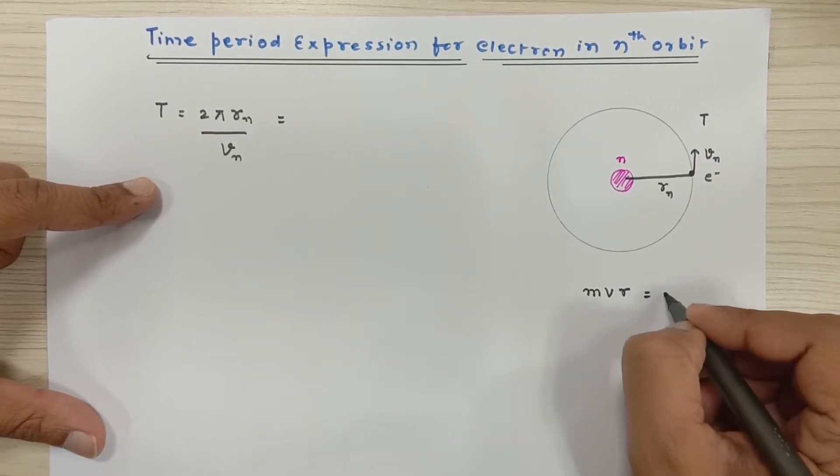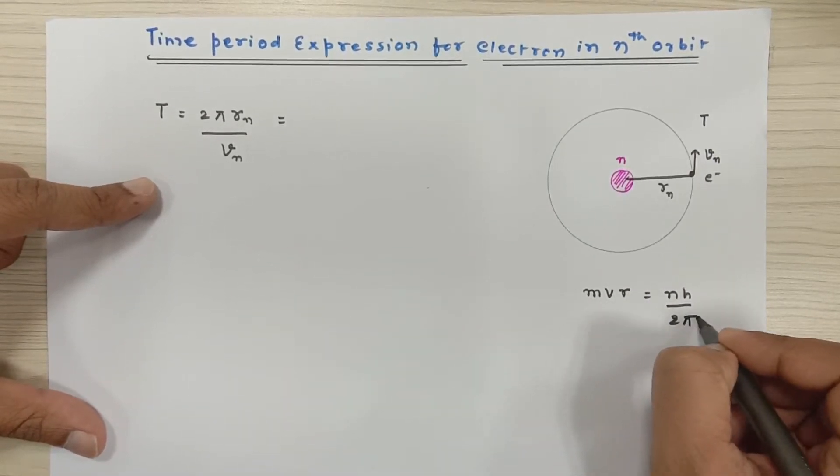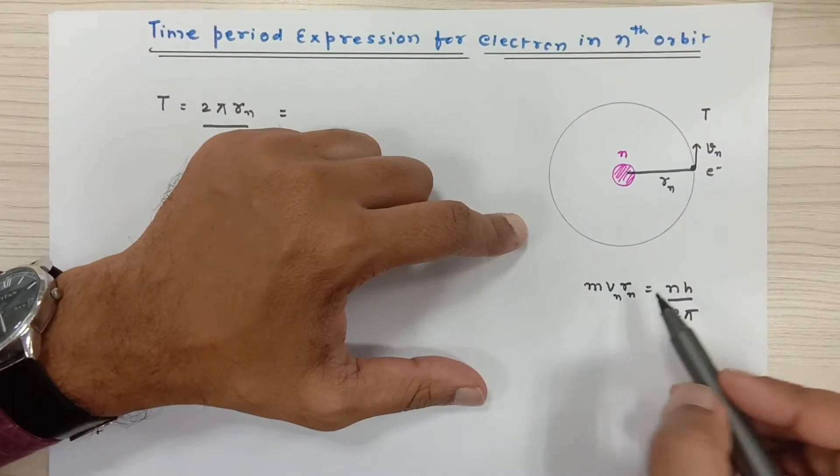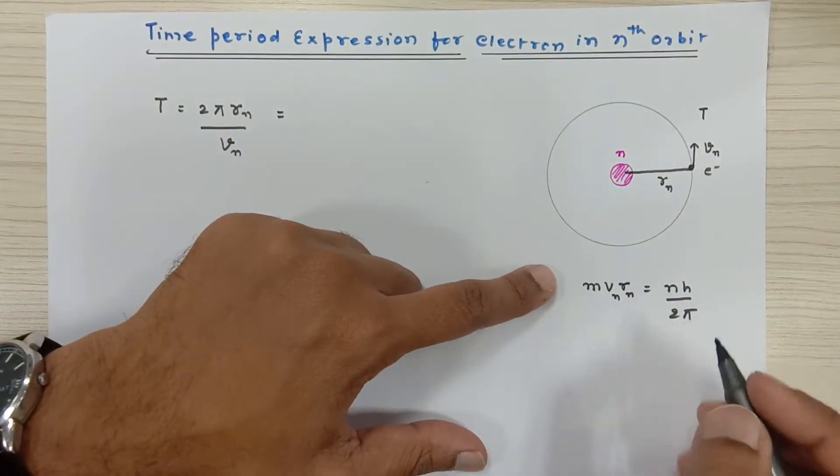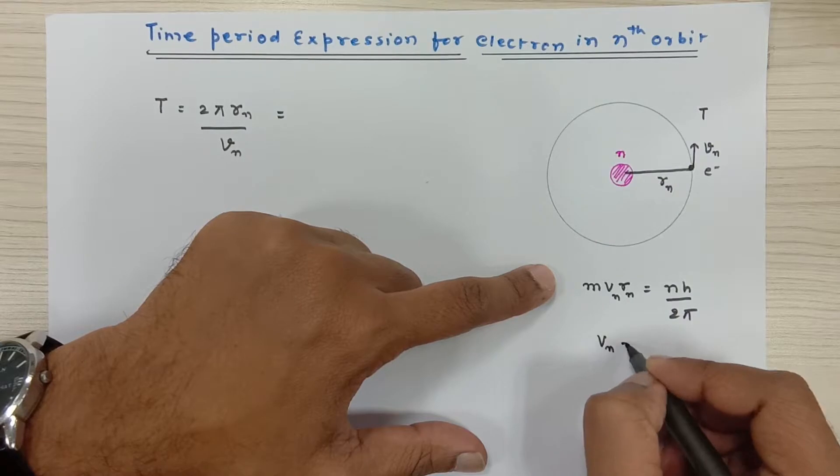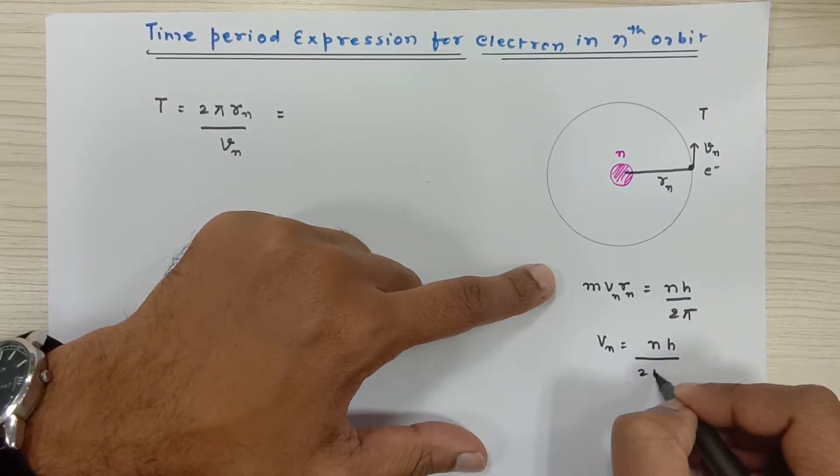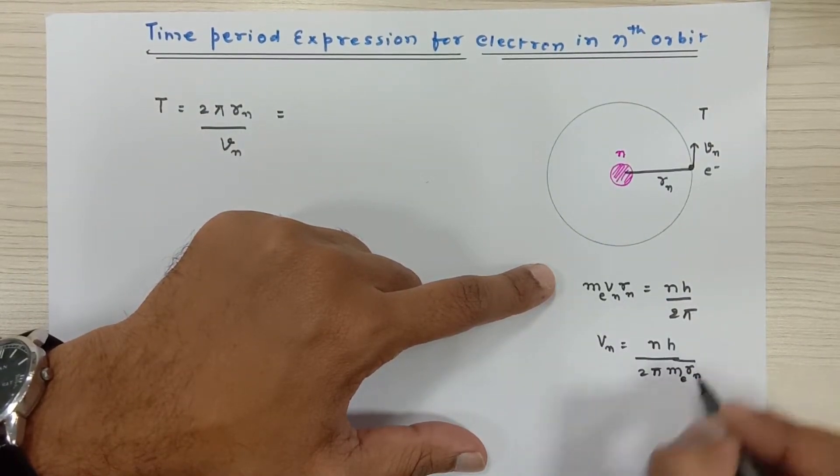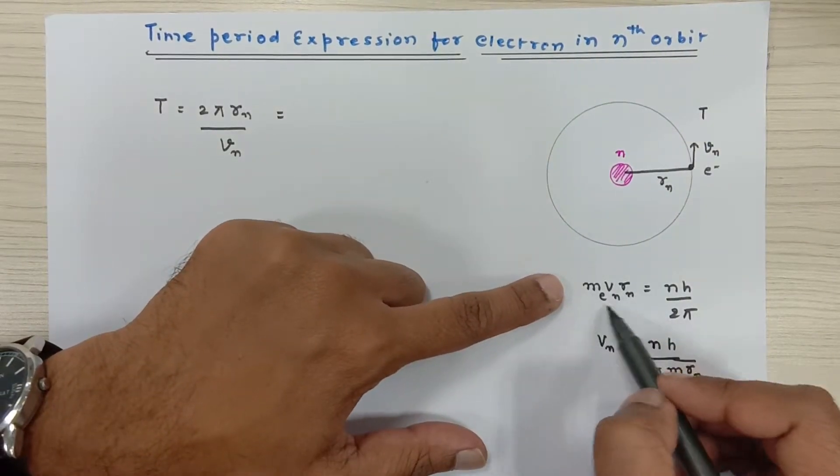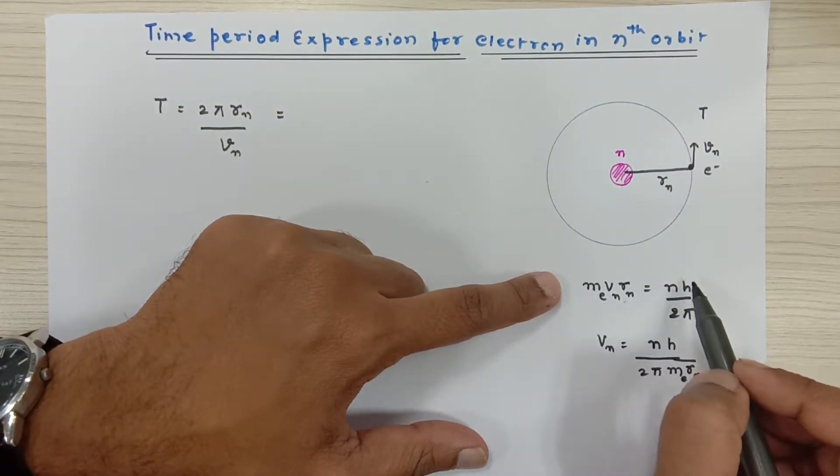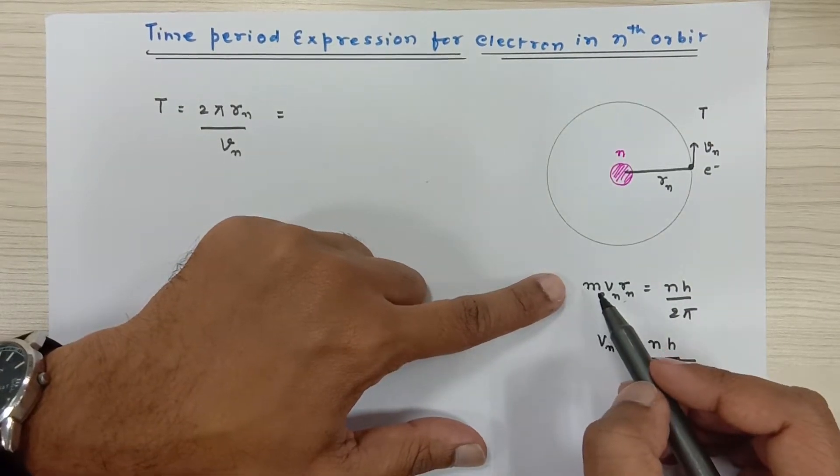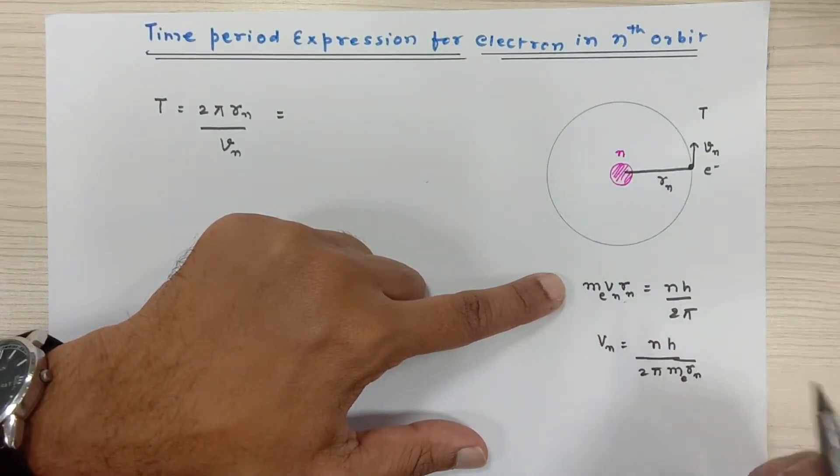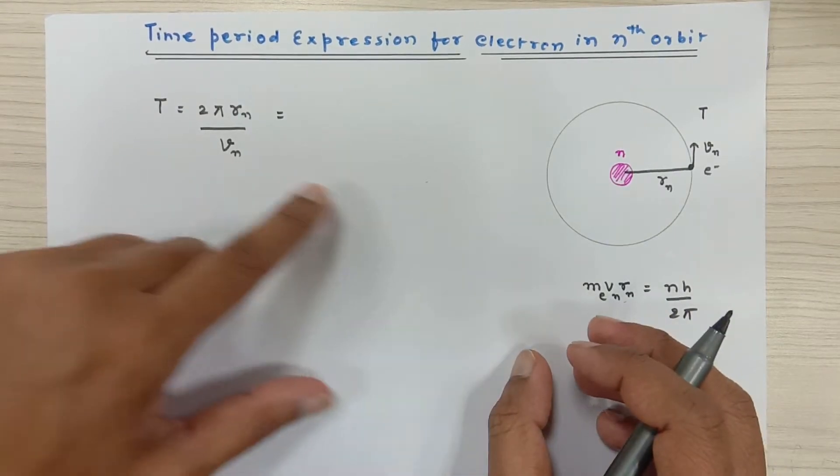We also note the second postulate of Niels Bohr – I'm sorry, this is the first postulate – mvr is equal to nh upon 2π. If I apply this to the nth orbit, then mvr is equal to nh upon 2π. From here I can write down vn as nh upon 2π times the mass of the electron times the radius of the nth orbit. This is the angular momentum should be equal to h upon 2π in integral multiples. So angular momentum of the thing performing circular motion, which is the electron. So this expression I am going to substitute it.